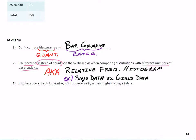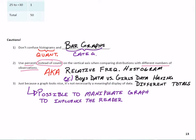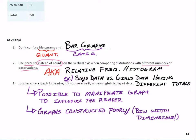To be clear, this applies any time two groups have different totals. Caution three: just because a graph looks nice, it's not necessarily a meaningful display of data. It's certainly possible to manipulate a graph to influence the reader. Consider the bin width dimensions — they should all be the same. It would be really misleading if the bars visually looked the same width but actually represented different-sized ranges.